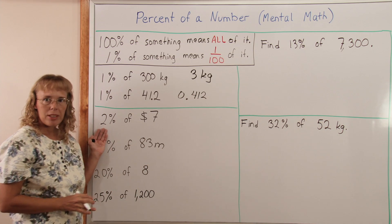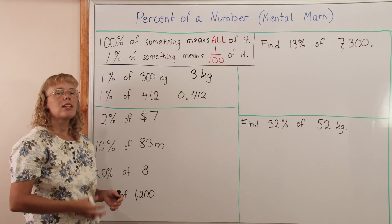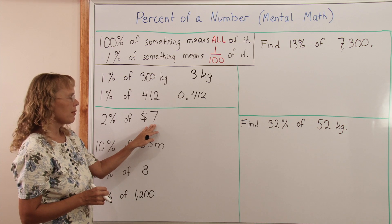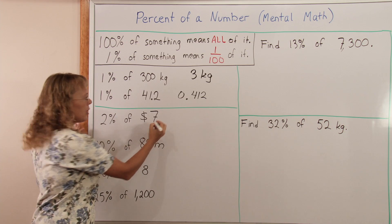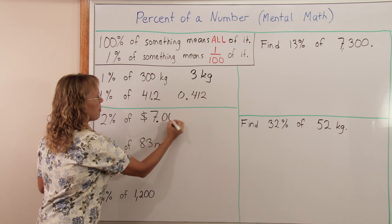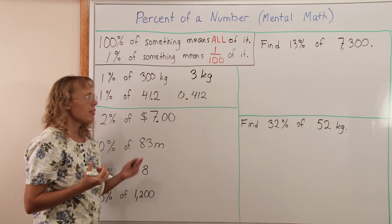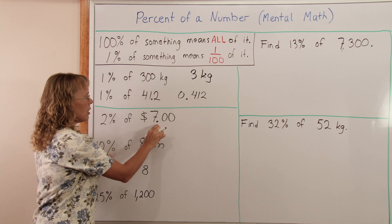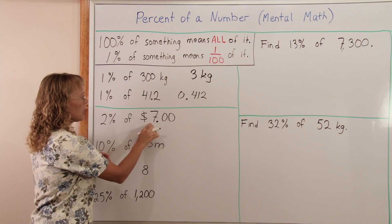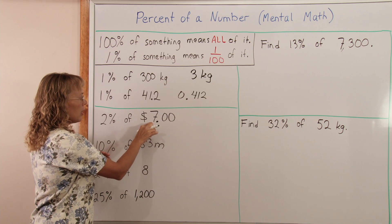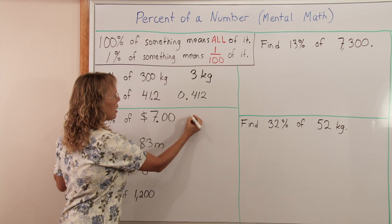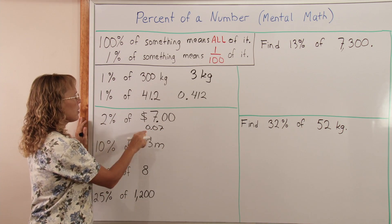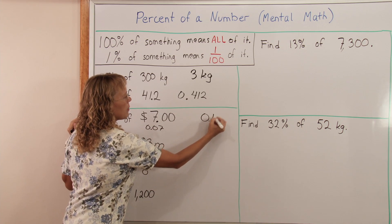To find 2% of something, we'll first find 1% of it and then double that. So first find 1% of $7. Let's put the decimal point here so we can move it. To find 1% of this, move the decimal point two steps. You're dividing by 100, so it moves this way, in front of 7 and then another step. So 1% of this would be $0.07, and 2% of it would be double that, or $0.14.